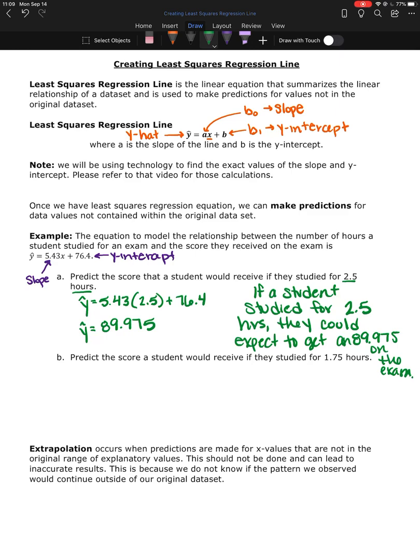Okay, this is an average for students that study 2.5 hours. But we can use that to predict for our student. But on average, students that are studying 2.5 hours, they're scoring about a 90, just under a 90% on this exam.